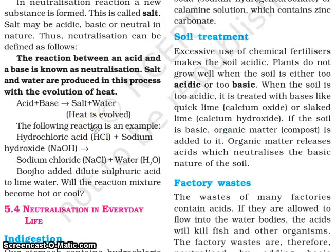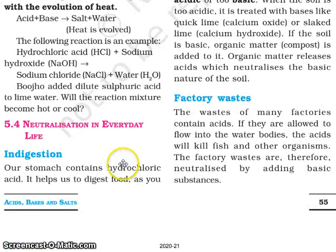Soil treatment: excessive use of chemical fertilizers makes the soil acidic. Plants do not grow well when the soil is either too acidic or too basic. When the soil is too acidic, it is treated with a base like quick lime (calcium oxide) or slaked lime (calcium hydroxide). If the soil is basic, organic matter compost is added to it. Organic matter releases acid, which neutralizes the basic nature of the soil.